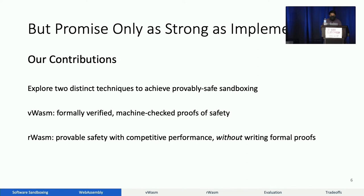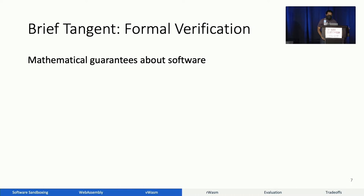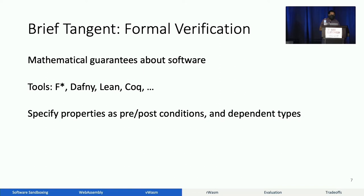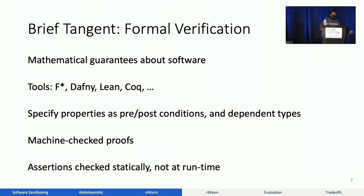I did mention formal verification, so a very brief tangent. Formal verification provides mathematically strong guarantees about software. Using tools like F-star, Daphne, Lean, and so on, we can specify properties as pre- and post-conditions and dependent types. Then we write proofs about the code, and these proofs are checked by the machine. These proofs look like lemmas with assertions inserted into the code, and these assertions are checked statically at verification time rather than at runtime as with normal programming languages.